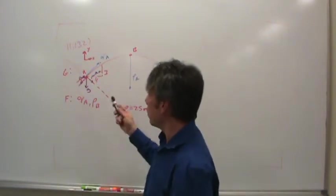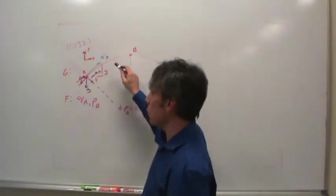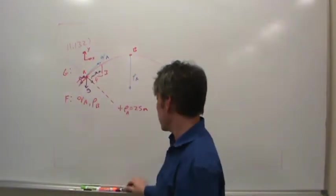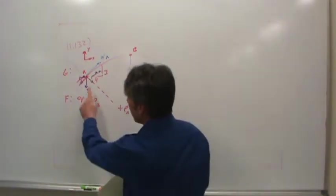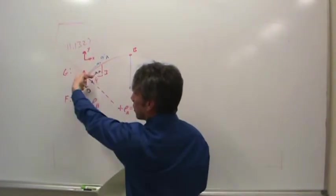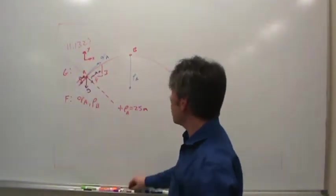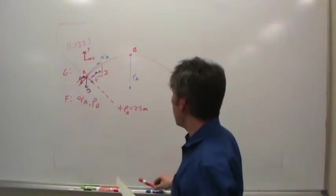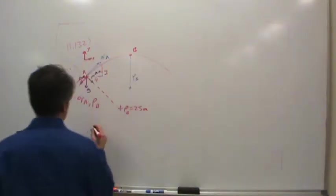Now, that might be confusing because one other fact that you know is true is that the x component of this velocity is constant. But that actually makes sense because g is in the y direction, so the x component has to be constant. So once again, it would be valuable to calculate the x component of the velocity. So let's just go ahead and do that.